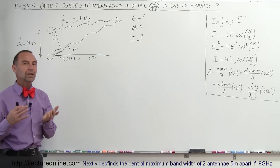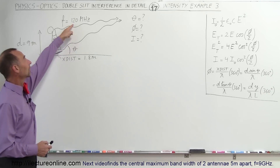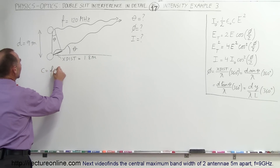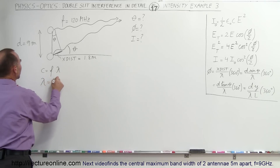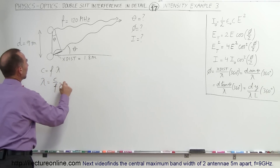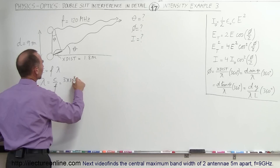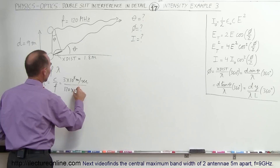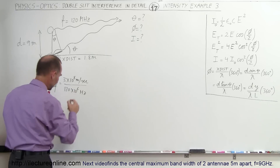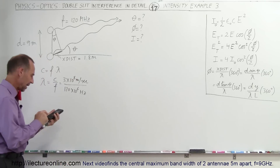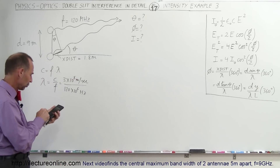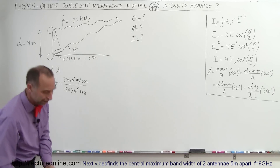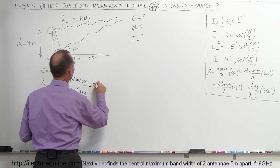First, we need to find the wavelength of this broadcasting station at 120 MHz. We know that the speed of light C equals frequency times wavelength, so wavelength equals C divided by frequency — that's 3 × 10⁸ meters per second divided by 120 × 10⁶ Hz. The answer is 2.5 meters for the wavelength.